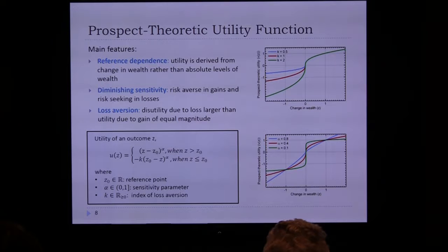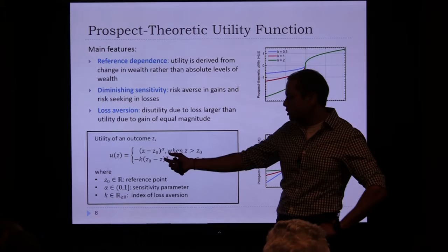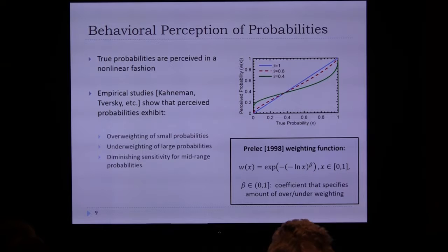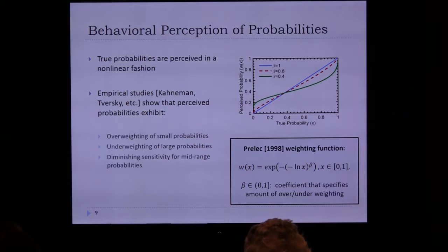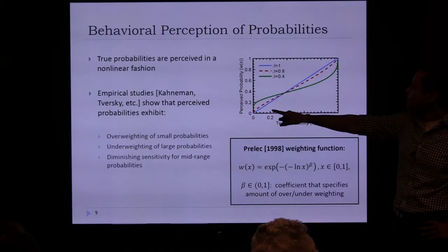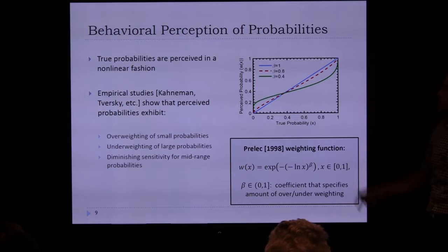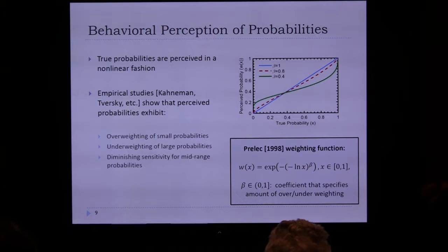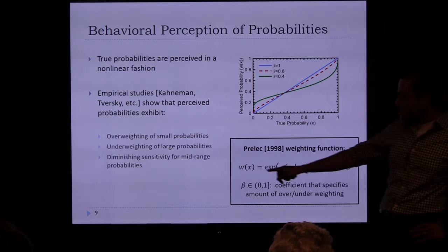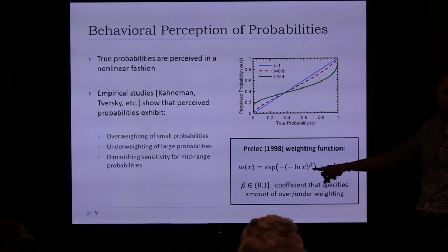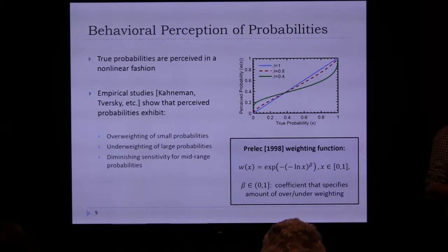The important parameters in the prospect theoretic value function are alpha and K. Additionally, people don't perceive probabilities in a linear way — they overweight low probabilities and underweight high probabilities, thinking rare events occur more often and common events less often than they do. We use the Prelec weighting function, parameterized by beta between 0 and 1: when beta equals 1, you get a straight line; as beta gets smaller, you get more inverse S-shaped skewing.